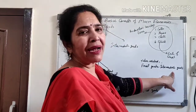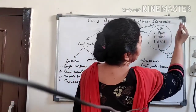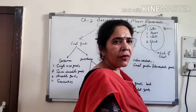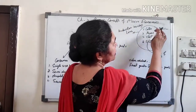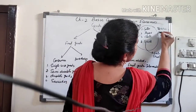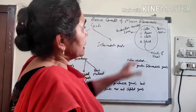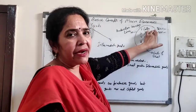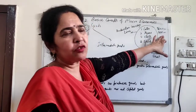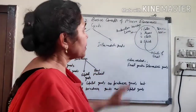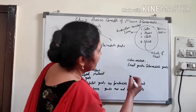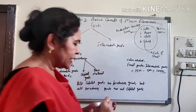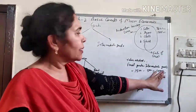For example: suppose the final goods are worth 1500 rupees and the intermediate cost — the cost of raw material — is 500 rupees. So value addition equals 1500 minus 500, which is equal to 1000 rupees. That means 1000 rupees is my income, my value addition.